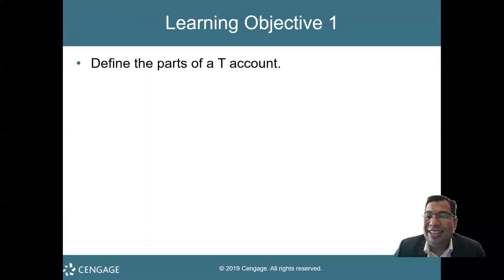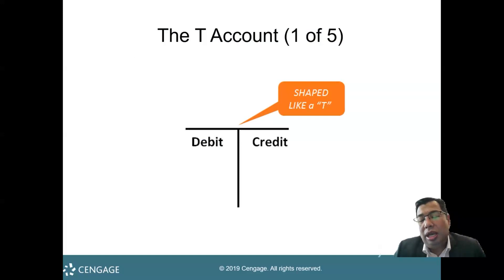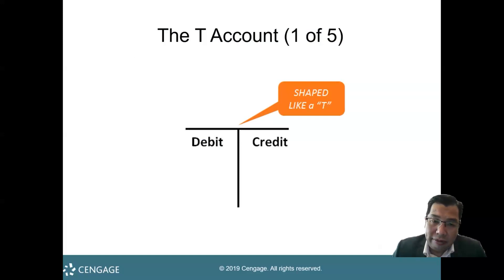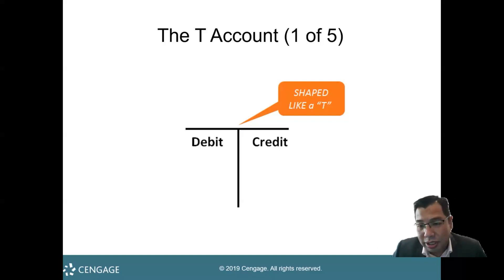What is T-accounts basically? The T-accounts look like the shape of the alphabet T. So you have on the left side — we call it as debit — whereas on the right side, we call it as credit.